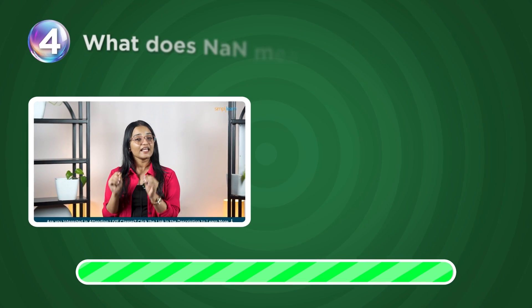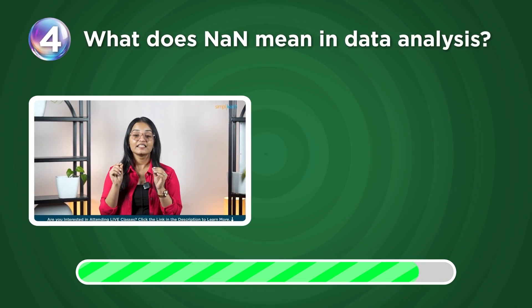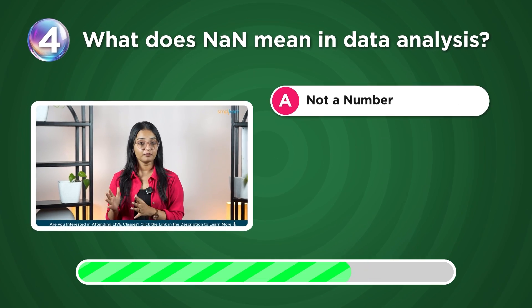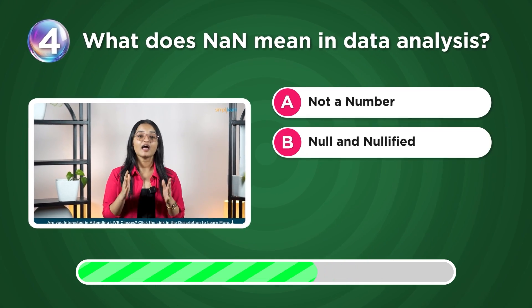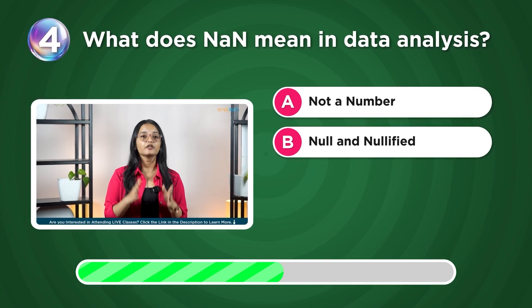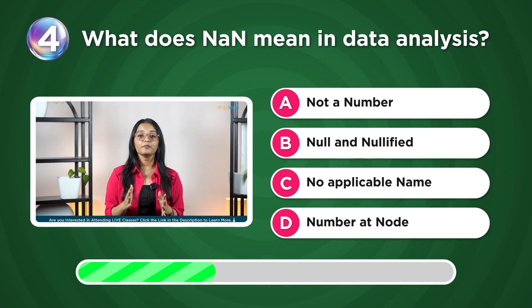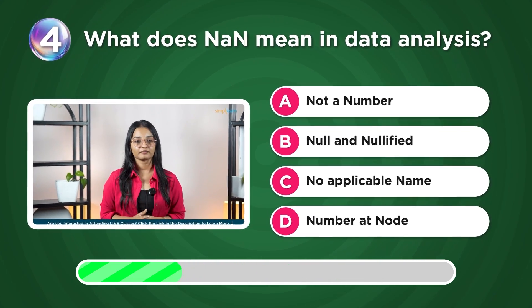What does NaN mean in data analysis? Not a number, null and nullified, no applicable name, or number at node?